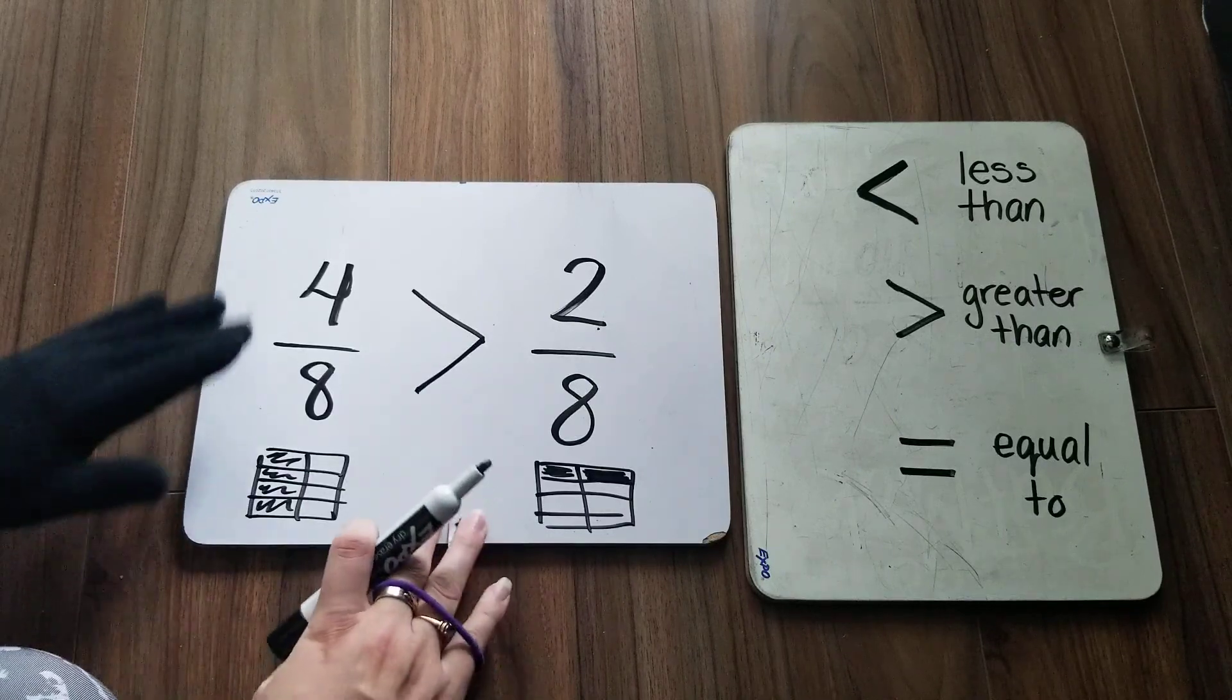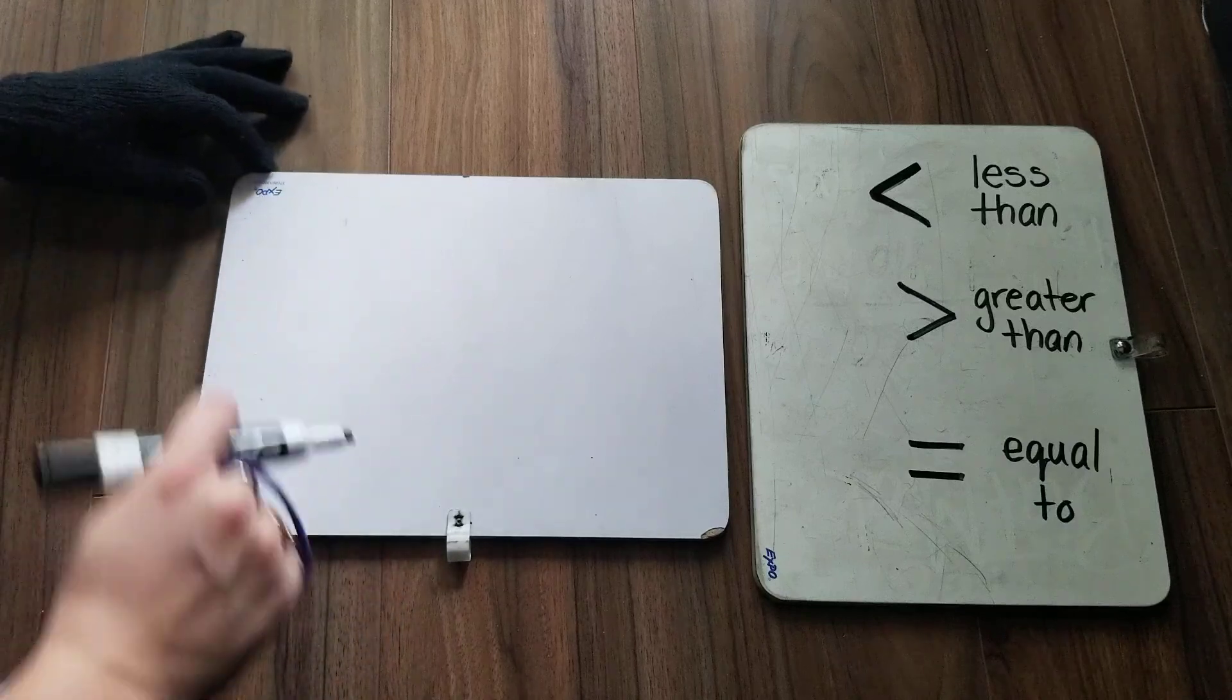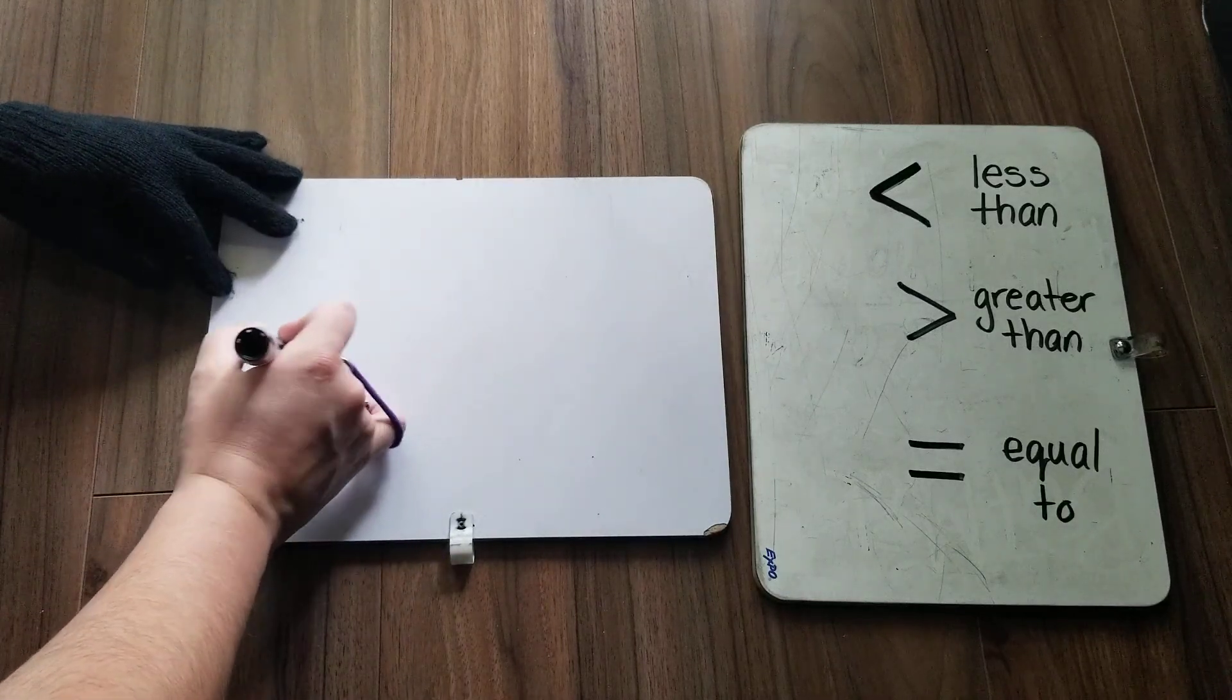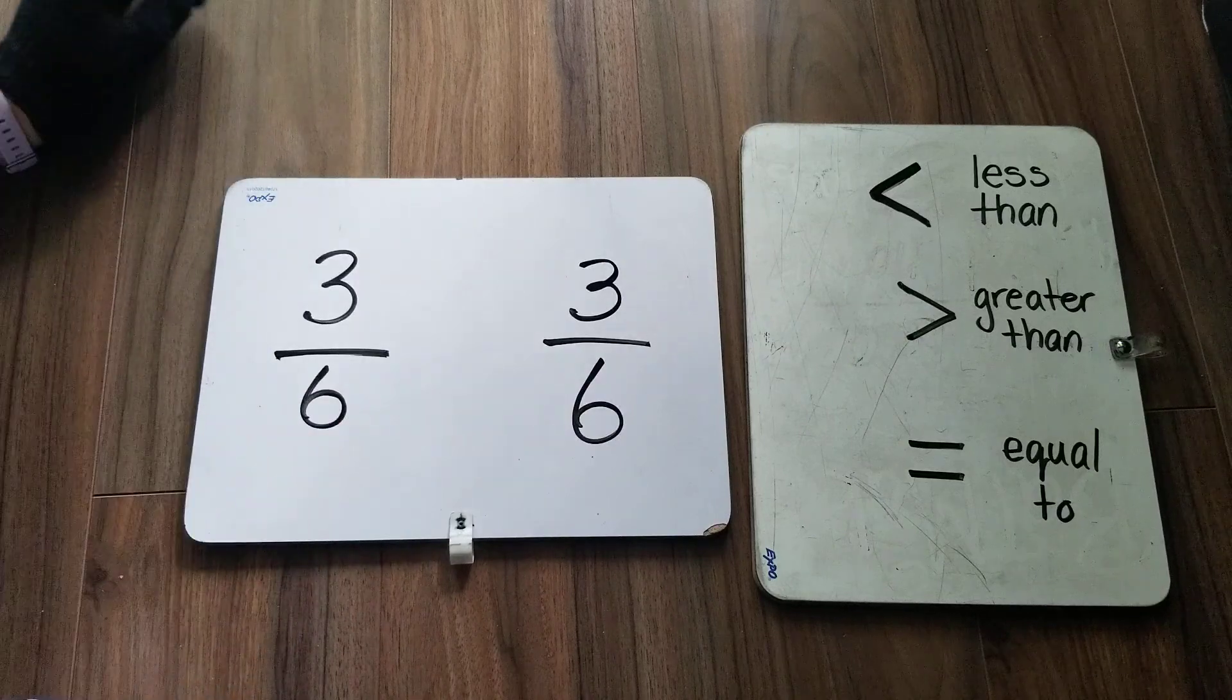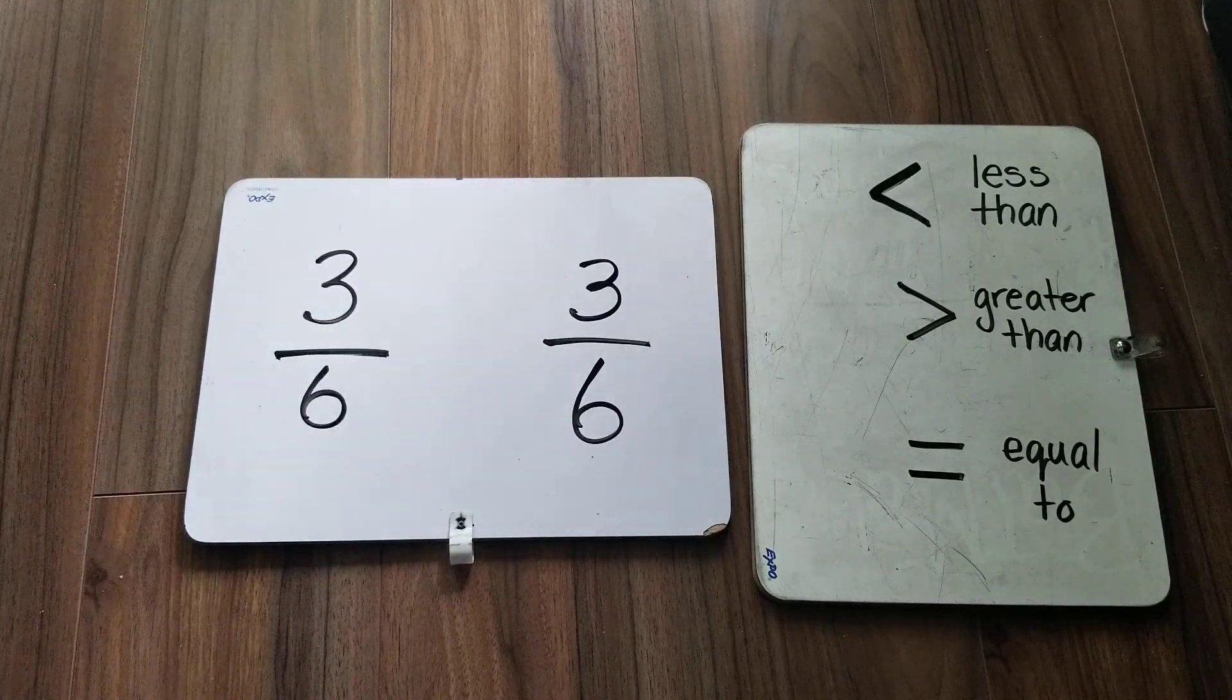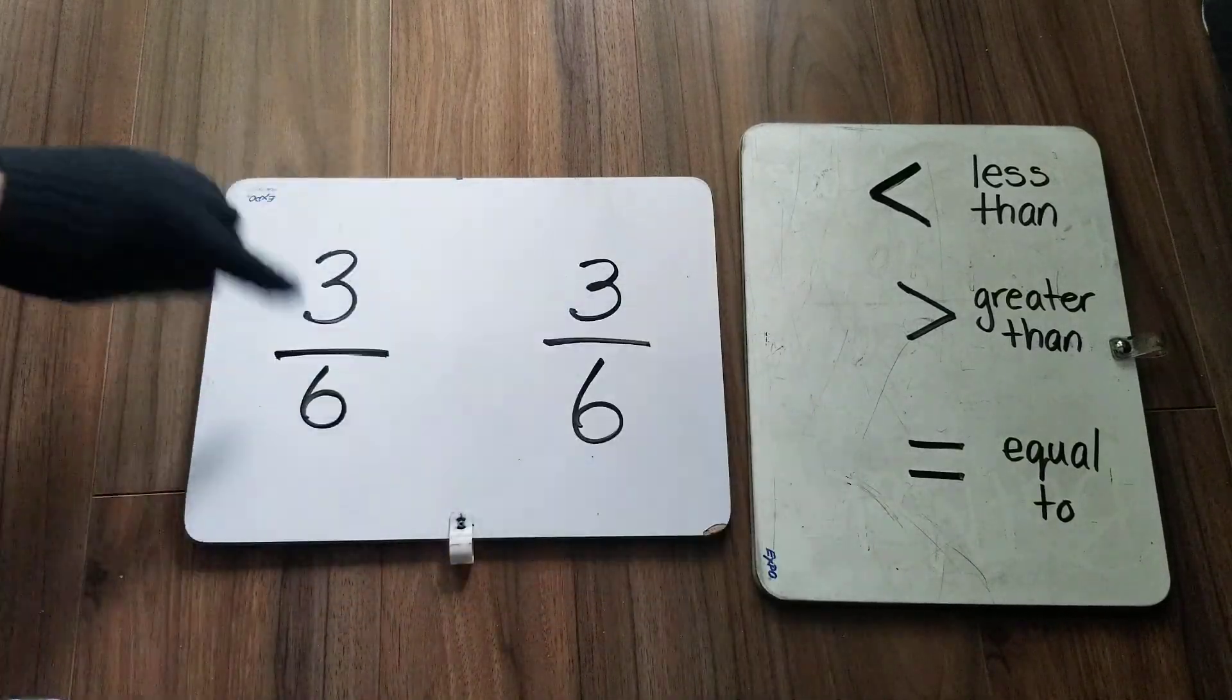Let's try one more. If you're comparing numbers with the same denominator again, I already know that three out of six and three out of six are the same. Three-sixths and three-sixths are equal to each other.